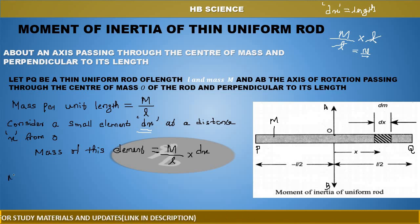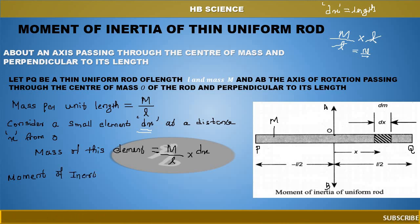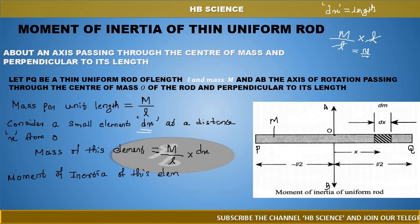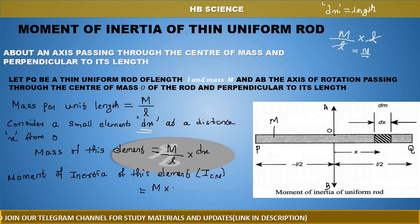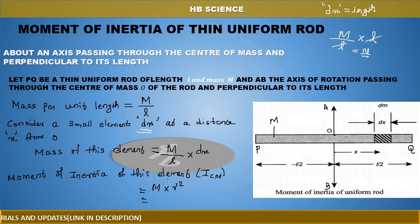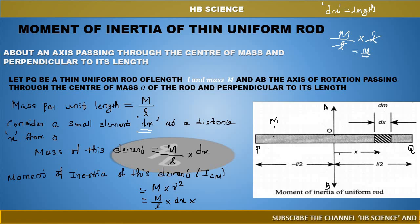The moment of inertia of this small element — what is moment of inertia? It is I equals mass into distance squared, that is MR squared. So the moment of inertia of the element is dI equals M by L into dx into x squared, where x is the distance of the element from the axis.